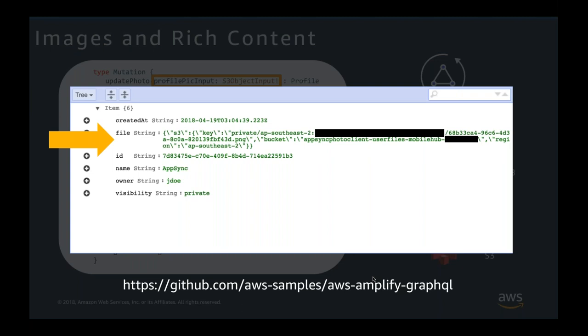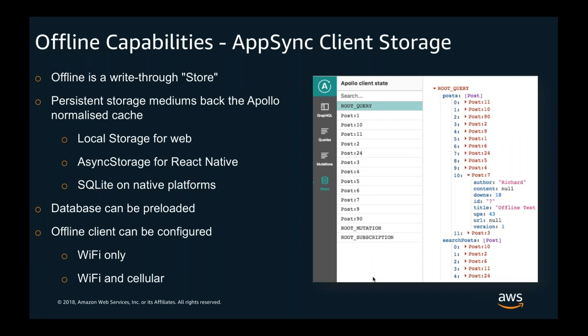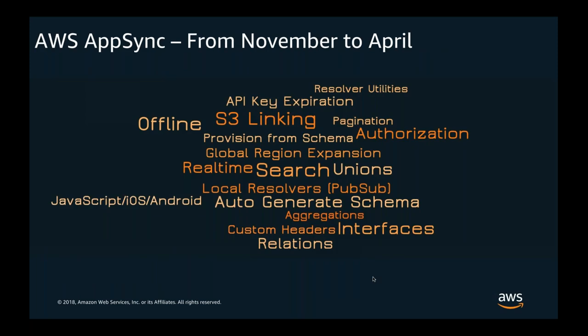Moving on to offline support — AppSync offline capabilities take advantage of different local storage mediums to store data while the client is disconnected, depending on the type of client: browser local storage for web clients, AsyncStorage for React Native, or SQLite on native platforms. You can preload the database as well as configure the offline behavior to send data over Wi-Fi, or using Wi-Fi and cellular. AppSync was released back in November at re:Invent, and the service team has been on an absolutely incredible and fantastic pace of innovation — releasing new features every couple of weeks, such as local PubSub resolvers, unions, interfaces, custom headers, and expansion to different regions including Sydney.